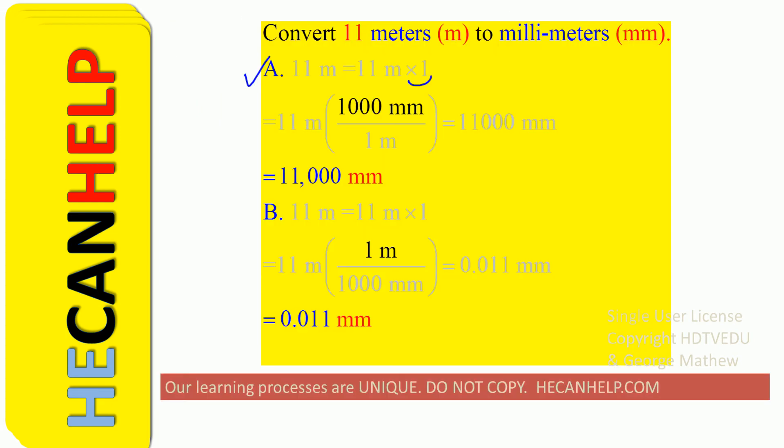11 meters times 1, we replace 1 in such a way that the meter and the meter cancel out. So what do we get? We get our answer in millimeters, and it is 11,000 millimeters.